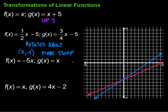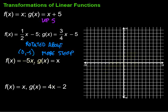So changing that slope rotates the line. For this next example, we have negative 5x, so the y-intercept is 0. The slope is negative 5, which as a fraction is negative 5 over 1. We go down 5 over 1 to the right, since the negative is handled by going down.